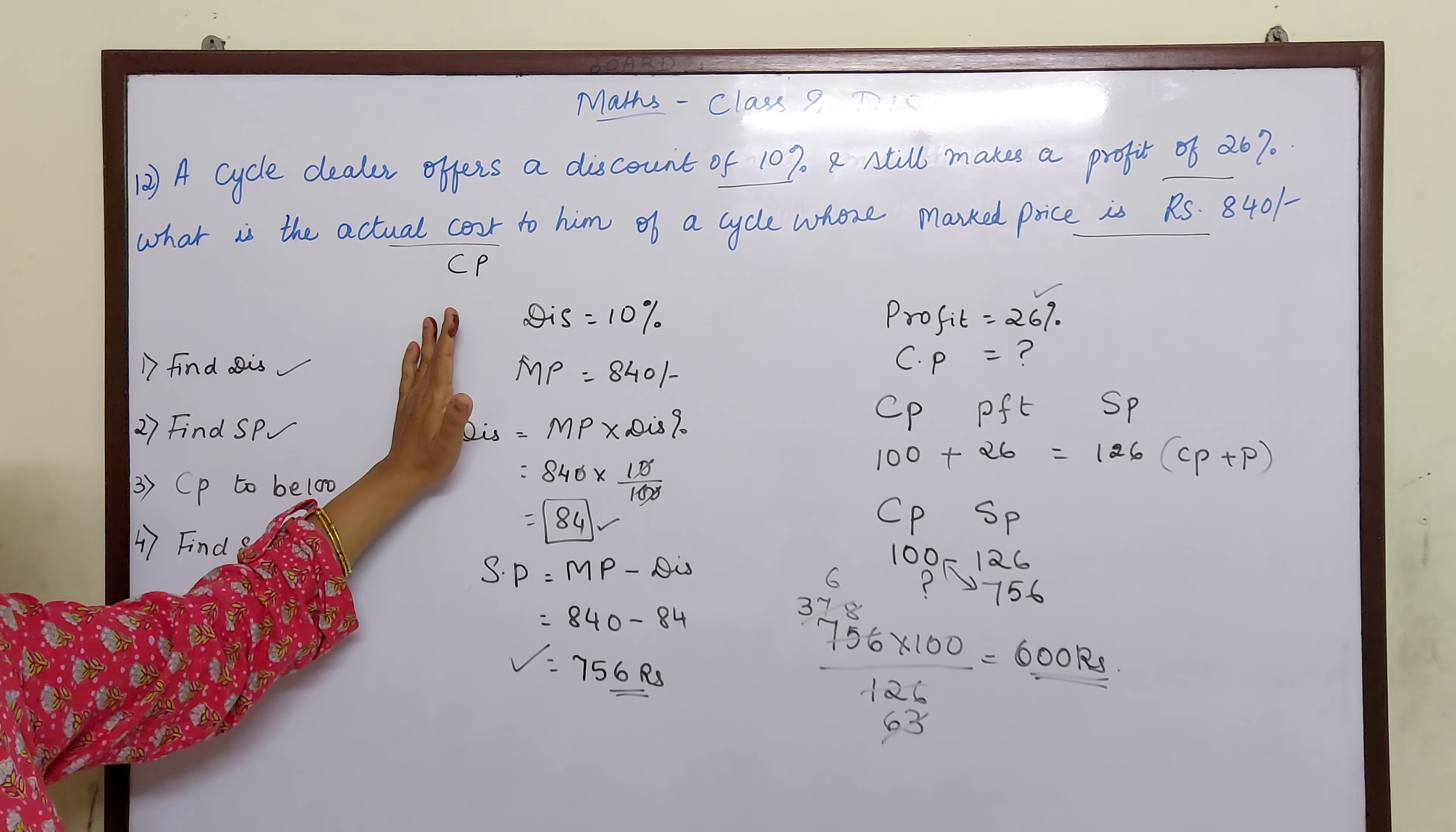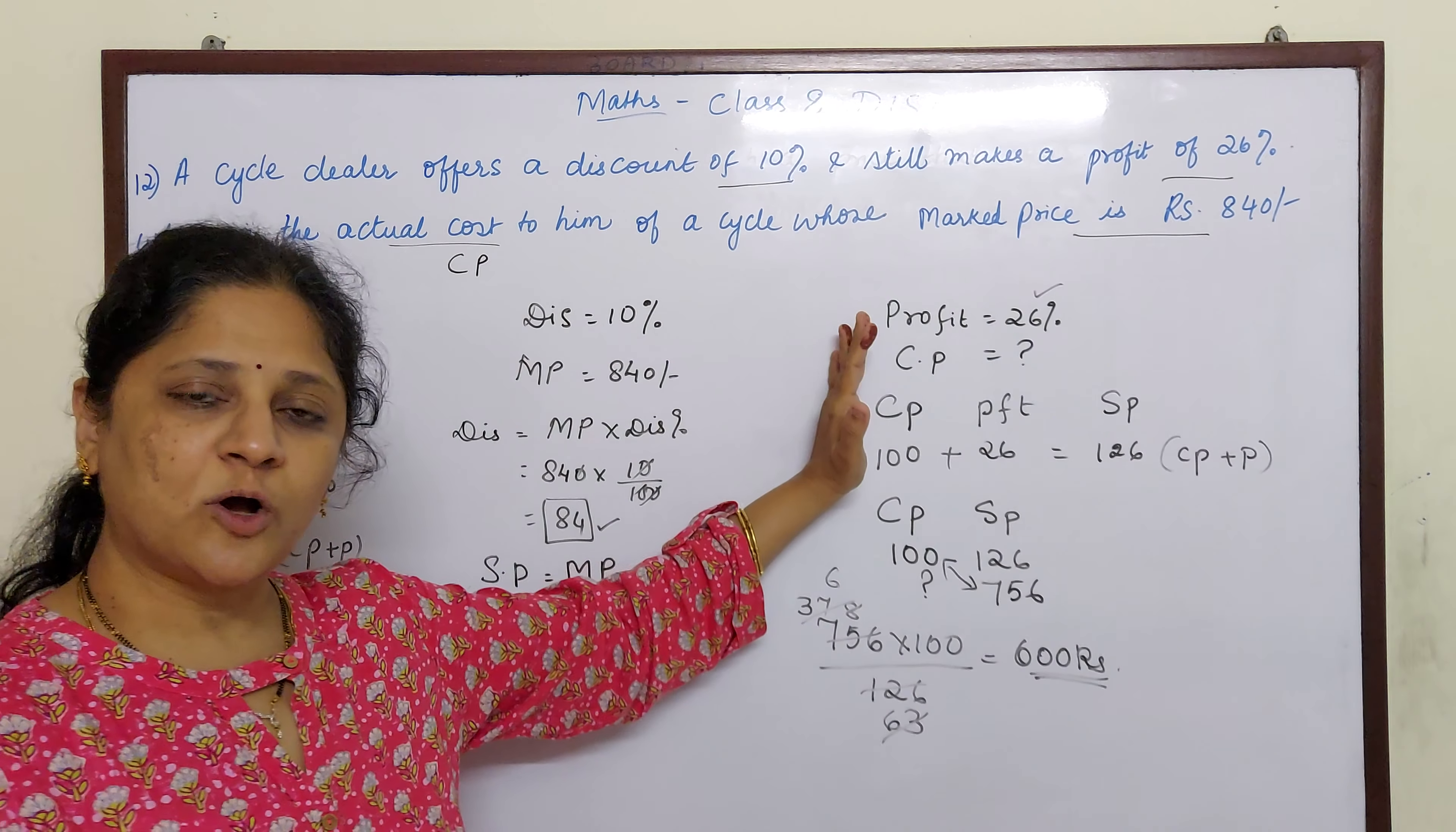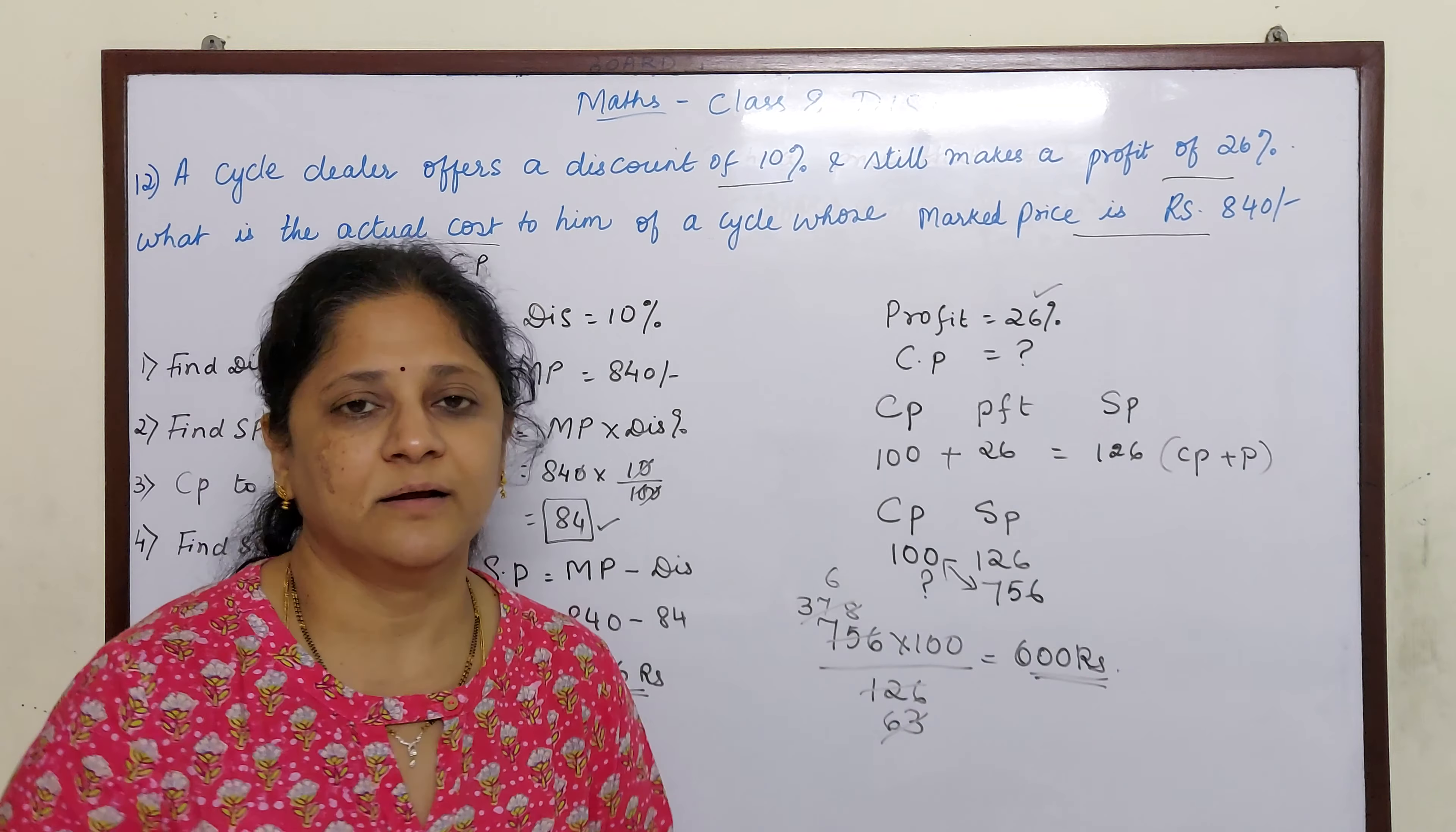Hope you understood children. With the help of discount and MP, find selling price. Assume cost price to be 100, get selling price, and compare this actual selling price to find the cost price. Bye.